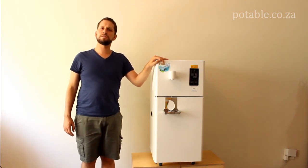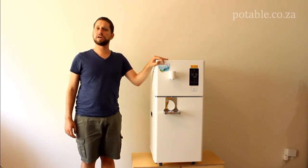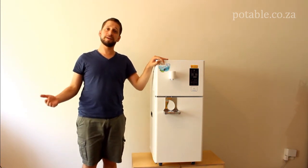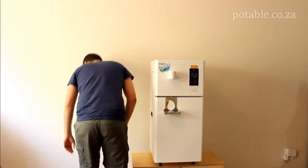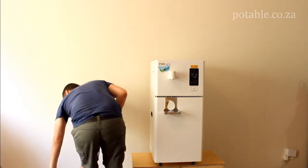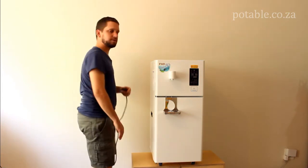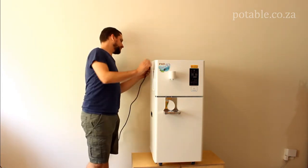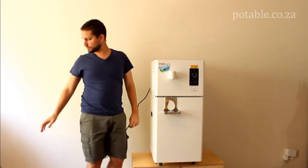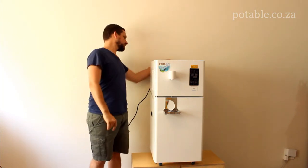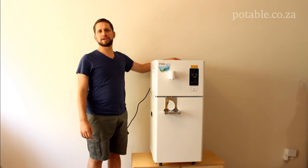So once you have taken your P50 out of its box you just simply need to plug it in. It is that simple. Take the plug out and plug it into the back of the machine. Plug it into a wall socket and flip the red switch at the back.